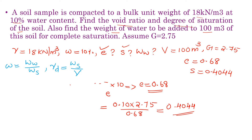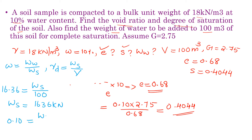Gamma D is 16.36, which equals W_s divided by total volume 100. From this, we calculate W_s as 1636 kN. Now substituting: water content is 10%, so 0.10 equals weight of water divided by weight of solids 1636. Solving, we get the weight of water as 163.6 kN.